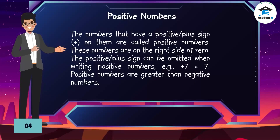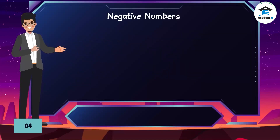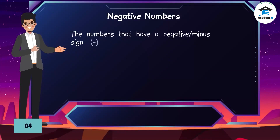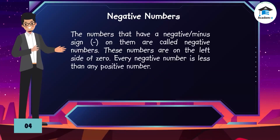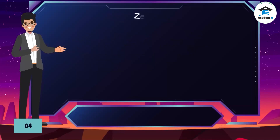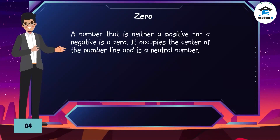Negative numbers: the numbers that have a negative or minus sign on them are called negative numbers. These numbers are on the left side of zero. Every negative number is less than any positive number. Zero: a number that is neither positive nor negative is zero. It occupies the center of the number line and is a neutral number.